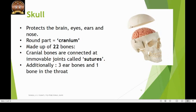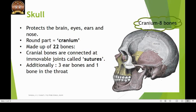The skull protects the brain, eyes, ears and nose. The round part of the skull which encases the brain is called the cranium. The cranium is made up of eight bones which are fused together at immovable joints called sutures. The part of the skull which makes up the face also consists of the lower jaw or the mandible bone, and it is made up of 14 bones.